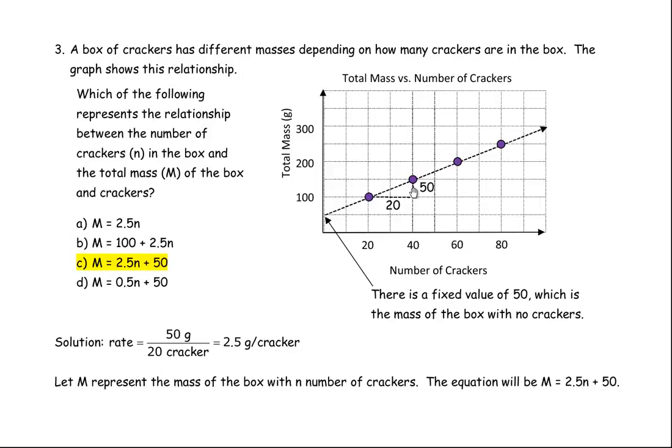So that's 50, now it's actually 50 grams. It's a good idea to write the unit so you understand what the rate represents. And the 20 is actually 20 crackers. So I didn't bother to put an S here because the units we would say grams per cracker. So 50 divided by 20 is 2.5. So 2.5 grams per cracker means that is the mass of each of the crackers.